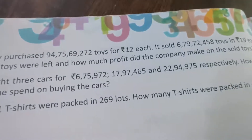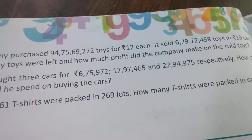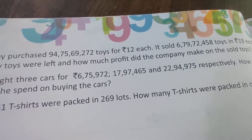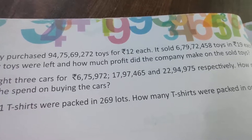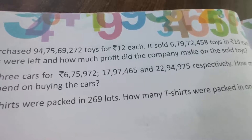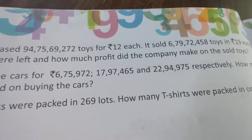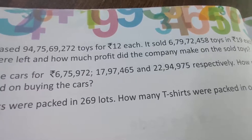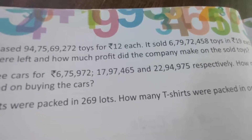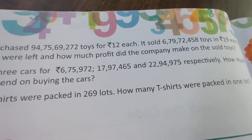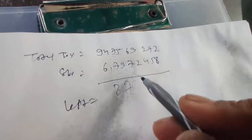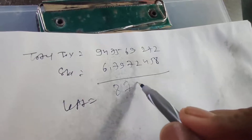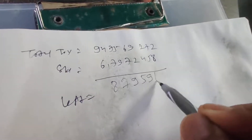Okay, now let's see — total toy hai: 9,4,7,5,6,9,2,7,2. And sold kar diya: 6,7,9,7,2,4,5. Toh kitana left ho gaya? Left nikaalna hai. Toh jaise bacho, yeh raha total toy, aur yeh sold. Jab is ko ghatao toh bacho, aayega: 8,7,9,5,9,6,8,1,1.